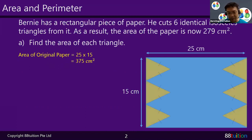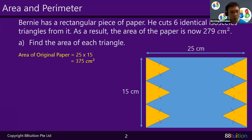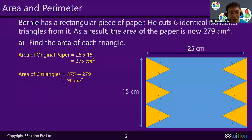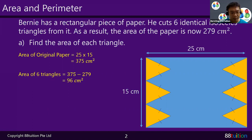After cutting out the six isosceles triangles, the blue colored area remaining is 279 square centimeters. So after removing the six triangles, the blue area is 279. We can find the area of the six triangles: the original piece of paper was 375, and after removing the six triangles it becomes 279. The difference — 375 minus 279 — equals 96 square centimeters, which must come from the six identical isosceles triangles Bernie removed.